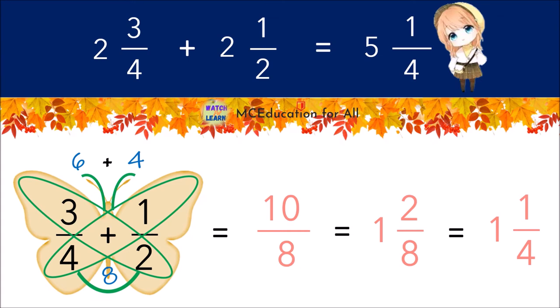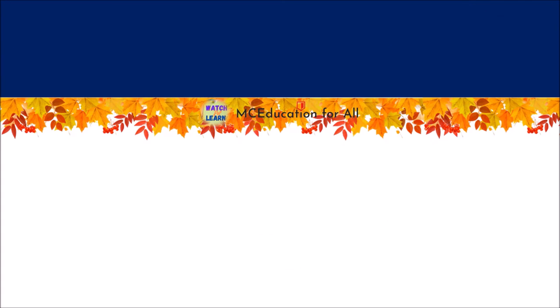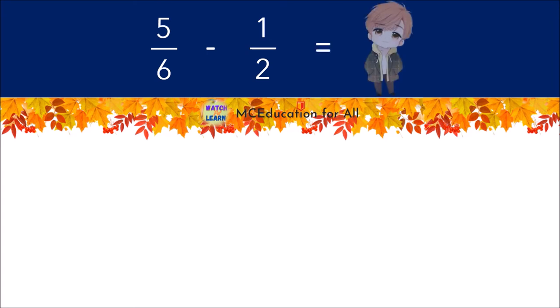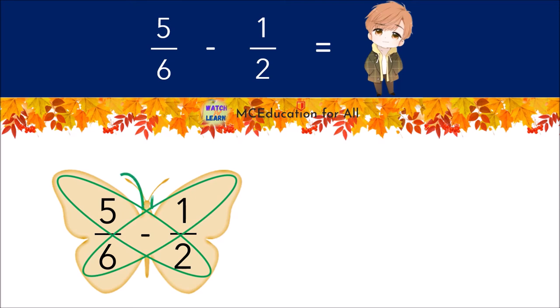We can also use the butterfly method to subtract fractions as well. Five-sixths minus one-half. We draw our wings, antennas, and the body. Next we multiply the numbers in each wing. Five times two equals ten, and six times one is six.